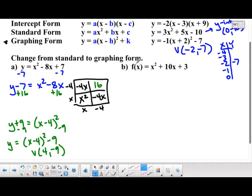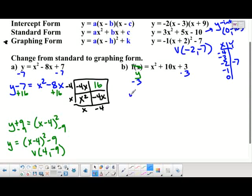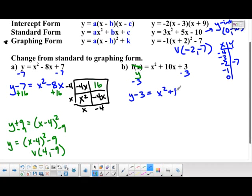Let's try it where we have f(x) instead of y. As we know, f(x) and y are really synonymous. So I'm just going to call it y for now and change it later. Once again, we're going to subtract 3. We want to get the x squared and the x's all on one side together. So I'll wind up with y minus 3 equals x squared plus 10x.